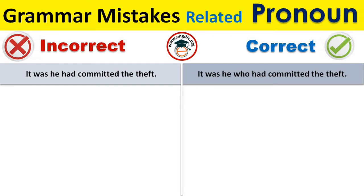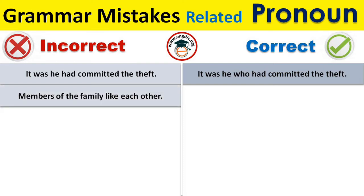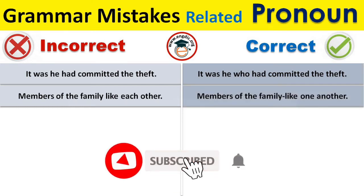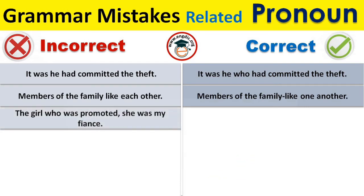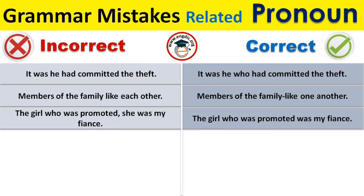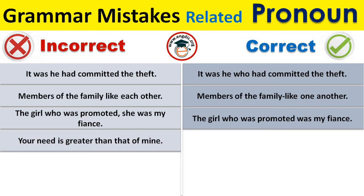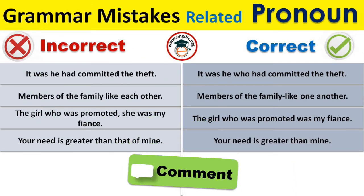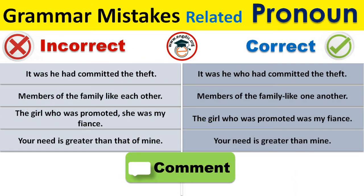'Members of the family like each other' is incorrect; the correct sentence is 'Members of the family like one another.' Also, 'This girl who was promoted, she was my fiancée' is incorrect. The correct sentence is 'The girl who was promoted was my fiancée.' Furthermore, 'Your need is greater than that of mine' is incorrect; the correct sentence is 'Your need is greater than mine.'